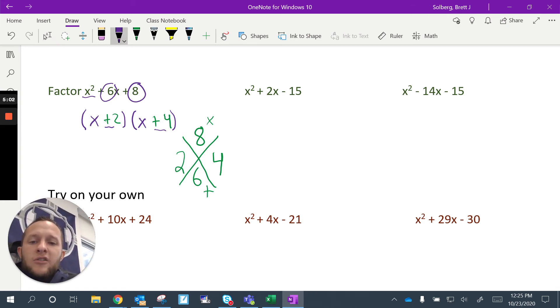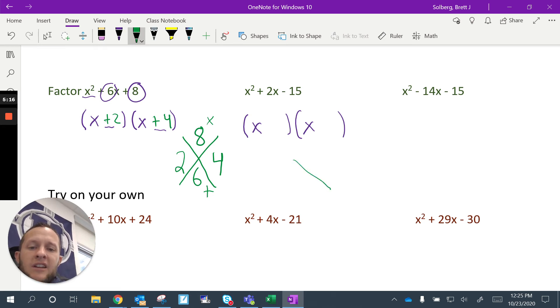I'm going to want to factor x² plus 2x minus 15. So again, I'm going to be putting it into parentheses. I'll have an x here and an x here. And I just need to think, okay, what are the two numbers? Well, I know that they need to multiply to give me negative 15 and then they need to add to give me positive 2.